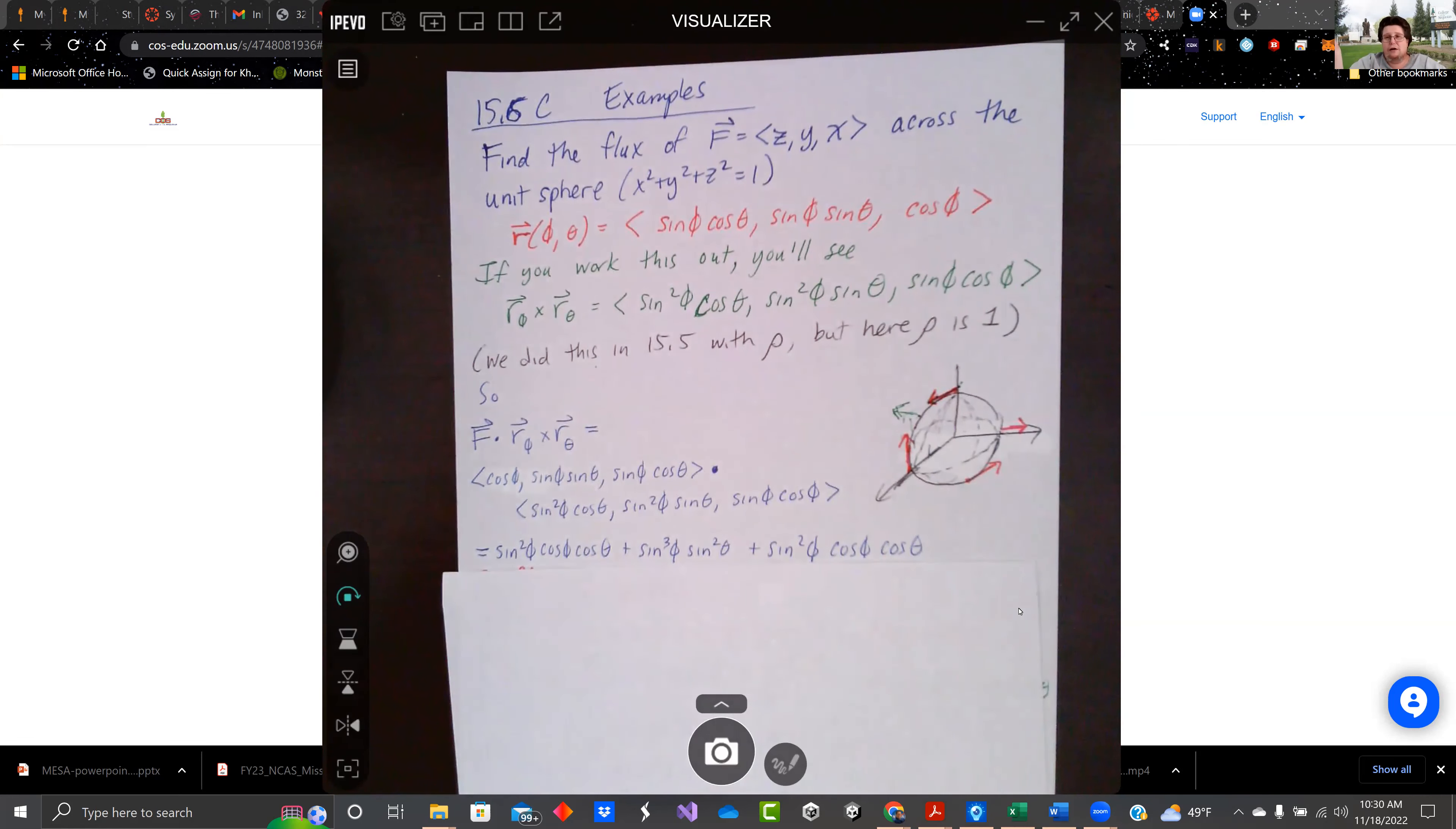But our integral, our flux is going to be F dotted with the cross product we just calculated, R with respect to phi and R with respect to theta. So I rewrote F, Z, Y, X in terms of phi and theta.